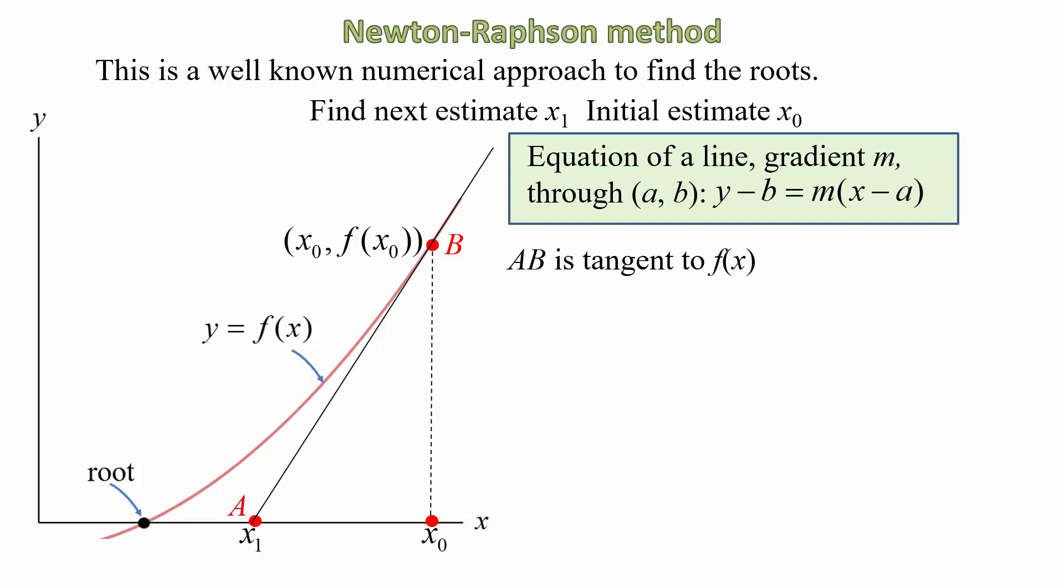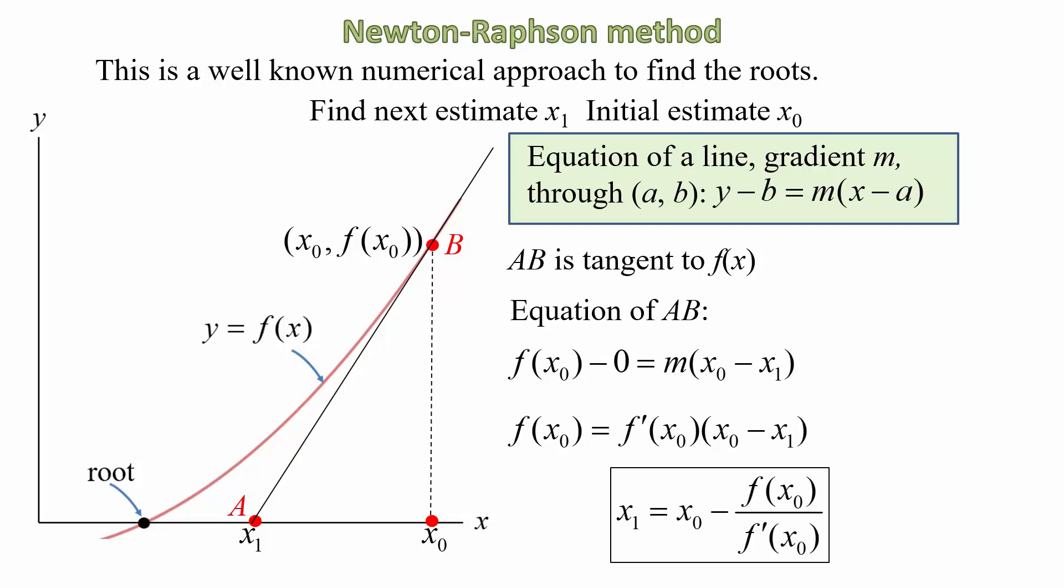Now AB of course is the tangent to our function f(x) and the formula for the equation of a straight line. So the coordinates of A are (x₁, 0) and the coordinates of point B are (x₀, f(x₀)). So applying the formula for the straight line we have f(x₀) - 0 = m(x₀ - x₁). The gradient of course means the derivative of the function at that point, so we can replace m by f'(x₀) which means the derivative of the function at x₀. Now we can rearrange that to obtain x₁ by itself. That means transpose the equation and we have an expression for our estimate for x₁.